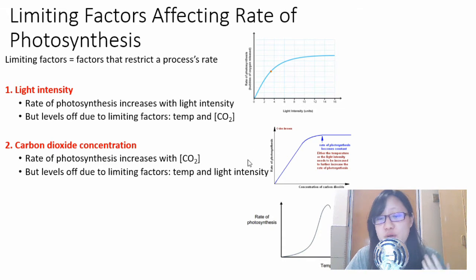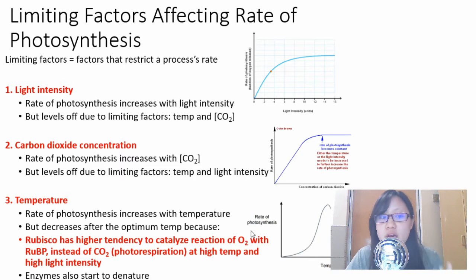The third limiting factor is temperature. The rate of photosynthesis increases with temperature but decreases after the optimum. There are a few reasons. Number one, Rubisco, a special enzyme from the Calvin cycle - it takes RuBP (ribulose bisphosphate) and combines it with CO2. But at high temperature, Rubisco has a higher tendency to catalyze a reaction between O2 and RuBP instead of CO2, which is weird. This is why the rate might decrease after the optimum. But also, at high temperatures, enzymes start to denature and don't work at optimum anymore, so the rate of reaction slows down.